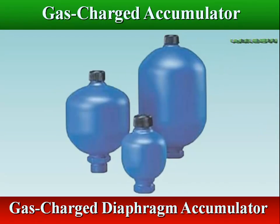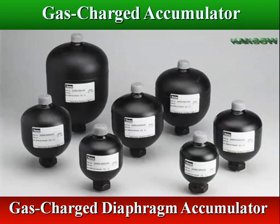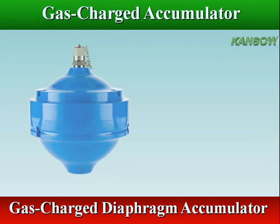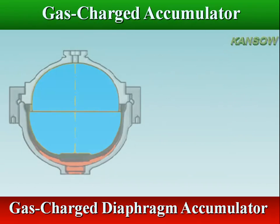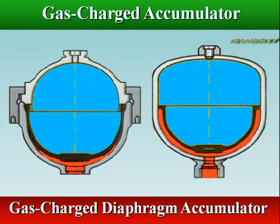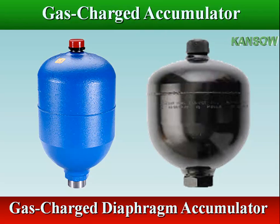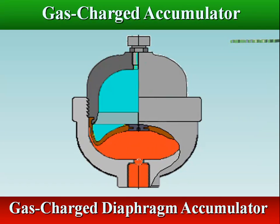Diaphragm type accumulator is similar to bladder type, except an elastomeric diaphragm is used in place of a bag. This would typically reduce the usable volume of the accumulator, so the diaphragm accumulator may not have the volume capacity of a bladder accumulator. Diaphragm accumulators may be spherical or cylindrical. The main difference with bladder accumulator is an increased maximum compression ratio of approximately 8 to 1. It is low weight, compact design, and good for shock applications with good response characteristics.